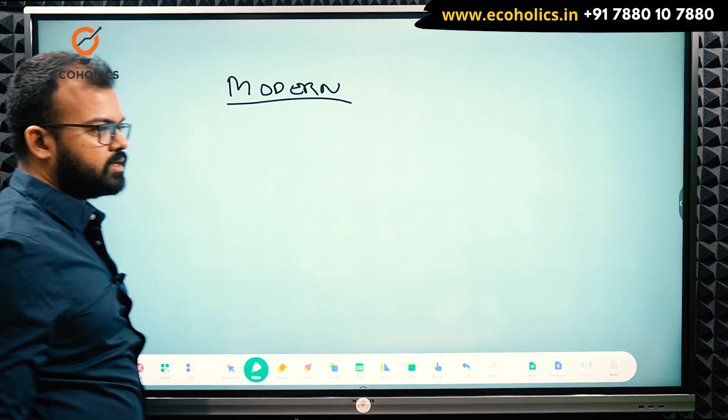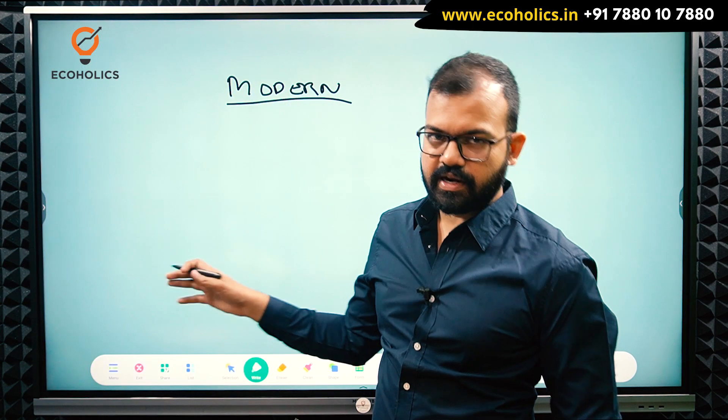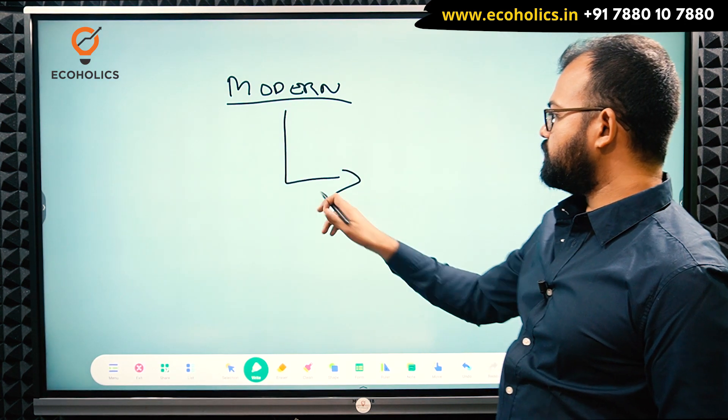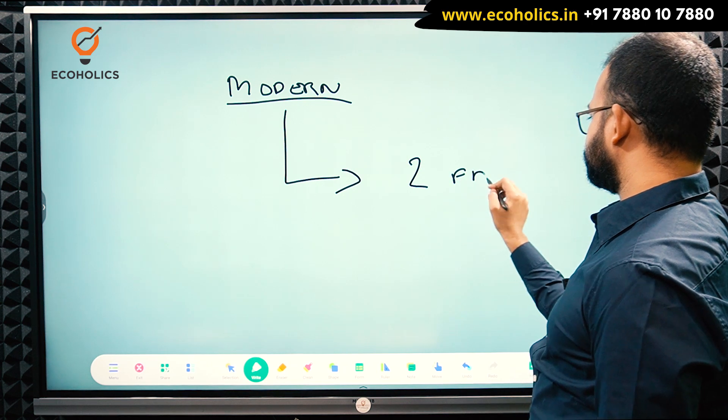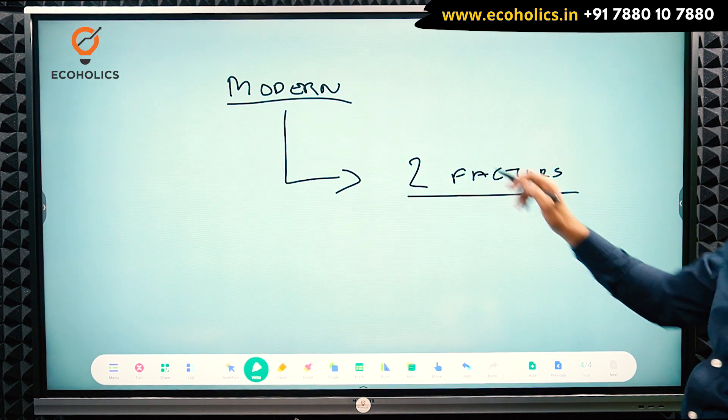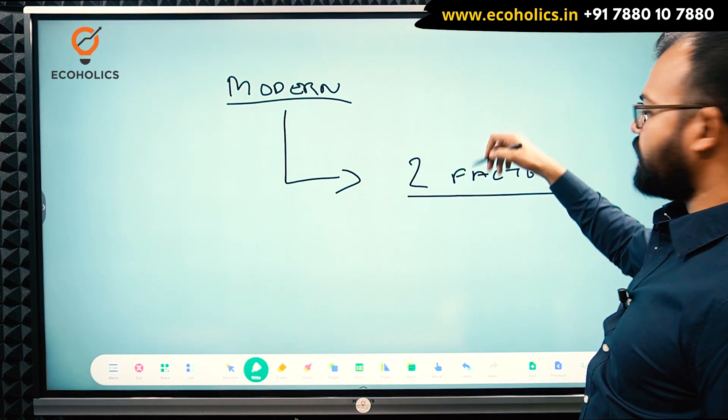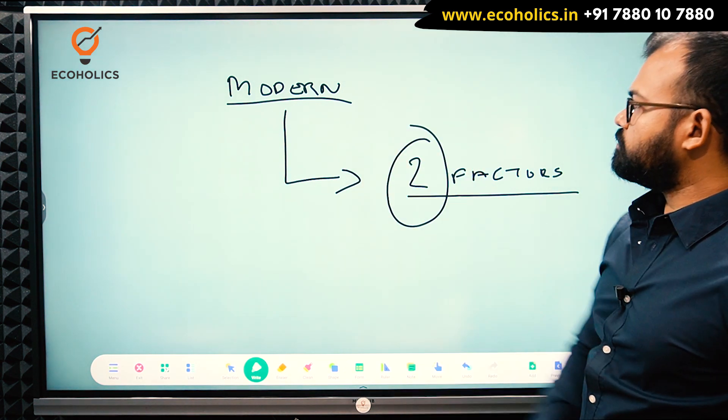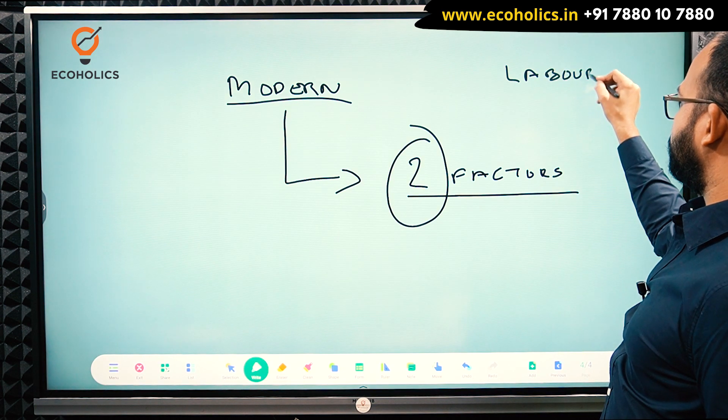The difference from Heckscher-Ohlin to the other theories is what they have done extra. Why it's called modern theory is because they have taken two factors. Generally before Heckscher-Ohlin, it was a 2x2x1 model, which means two countries, two commodities, and one factor. But Heckscher-Ohlin added another factor.